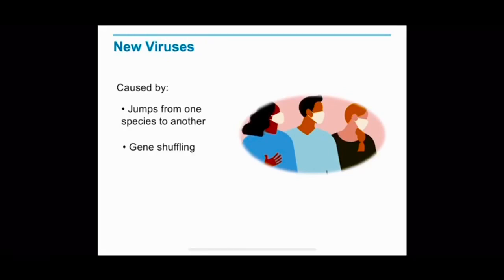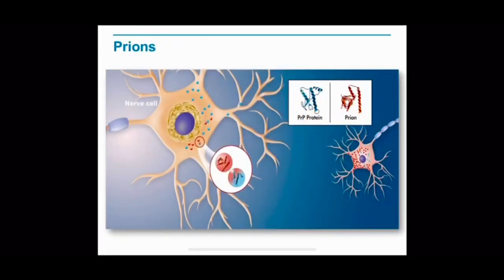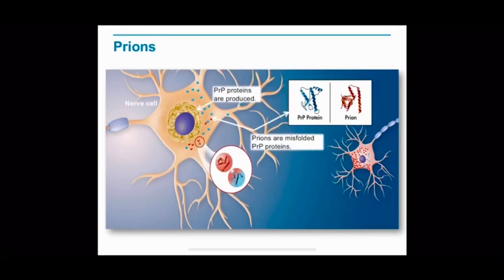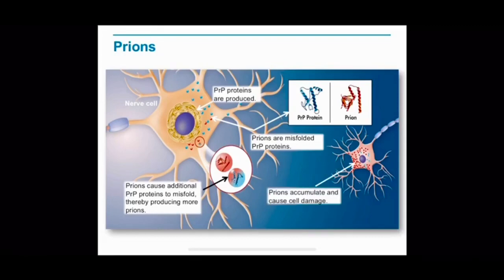Gene shuffling is also a reason for new viruses to emerge. An infectious disease in sheep called scrapie led to the discovery of particles called prions, which is short for protein infectious particles. Although prions were first discovered in sheep, many animals including humans can become infected with prions. They are formed when a protein known as PrP gets improperly folded. Prions themselves can cause PrP proteins to misfold, producing even more prions. An accumulation of prions can damage nerve cells, as shown in the figure. First, PrP proteins are produced; the proteins are misfolded; prions cause additional PrP proteins to misfold, producing even more prions; and finally, prions accumulate and cause cell damage.